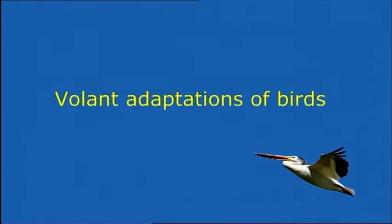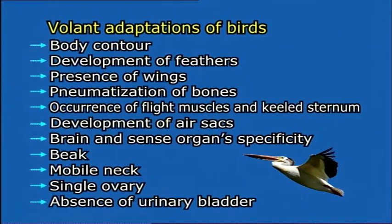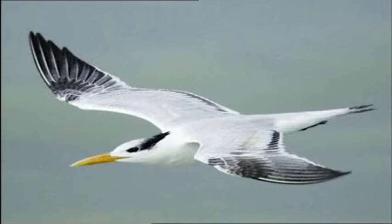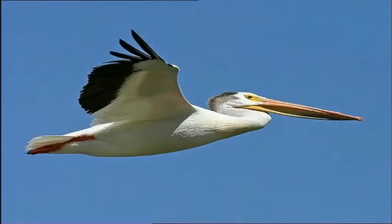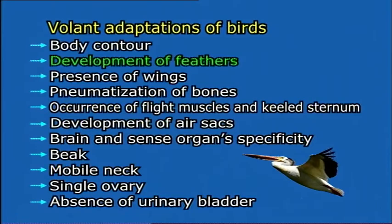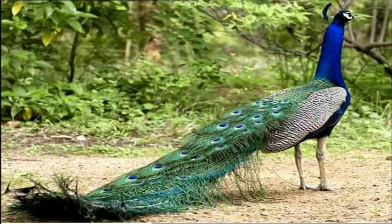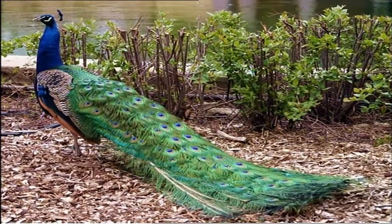In true flight, power is applied and the movement in air is sustained. Let us see volant adaptations of birds in detail. Birds have numerous adaptations for true flight. The main adaptations include body contour: the streamlined body is spindle-shaped or board-shaped, countering least aerial resistance and easily passing through the air. Development of feathers: the entire body of the bird is invested with a close covering of feathers constituting the plumage.